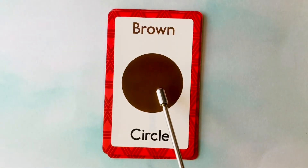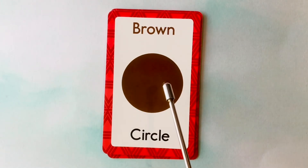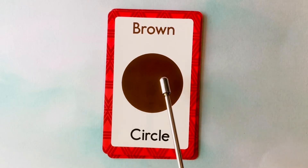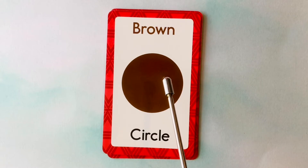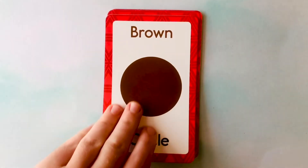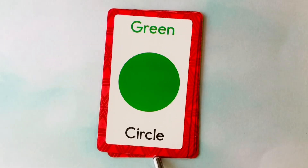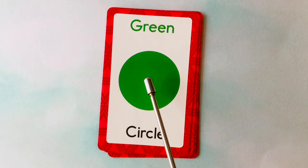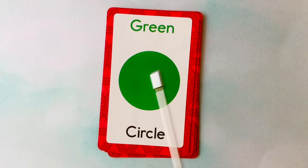This is a circle. What color is this circle? It's a brown circle. This is a brown circle. This is also a circle. What color is this circle? It's a green circle. This is a green circle.